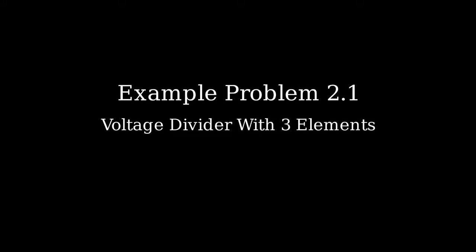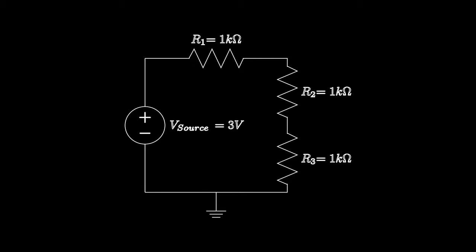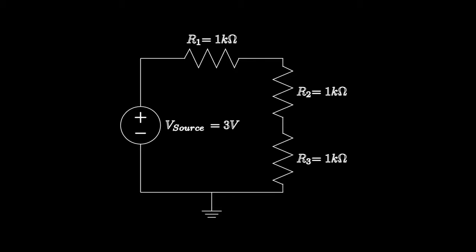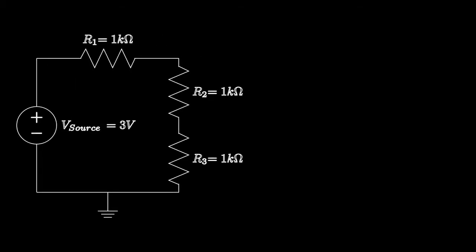In this video, we're going to be discussing a voltage divider with three resistors in it. For this example problem, what we're trying to figure out is how much voltage there is across R1, which is acting as our knob resistor, and how much voltage there is across R2 and R3 combined, which is acting as our load.